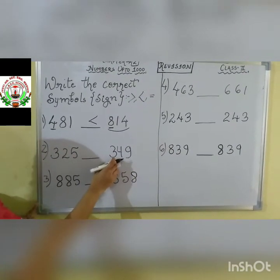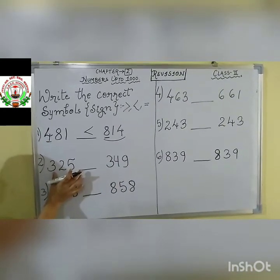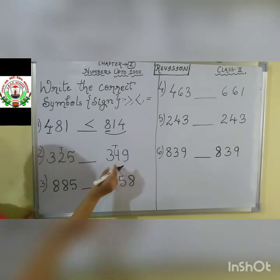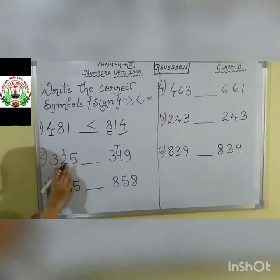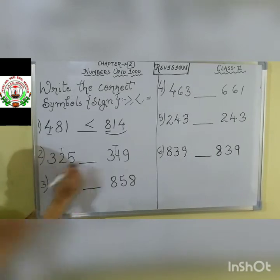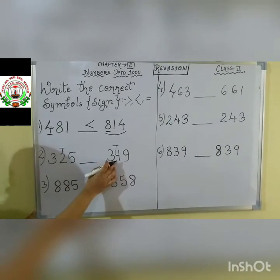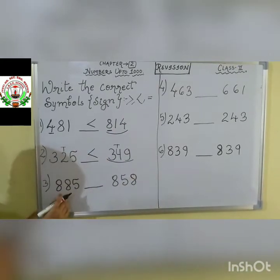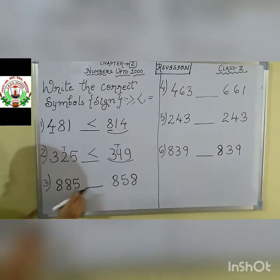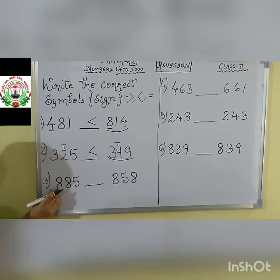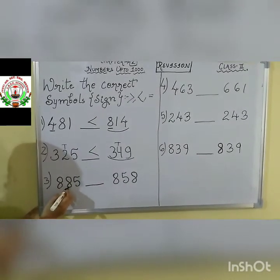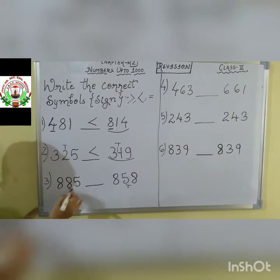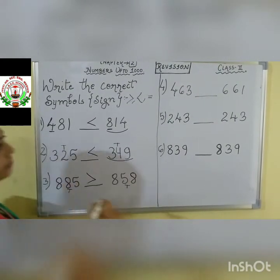Next: 325 and 349. Here, both the hundreds places have the same number 3. Then come to the tens place. In 325 the tens digit is 2; in 349 the tens digit is 4. Which one is greater? Definitely 349 will be greater. Next: 885 and 858. Again, hundreds place is the same. So we will see the tens place. Tens place is 5 for 885 and 8 for 858. So 858 will be greater.